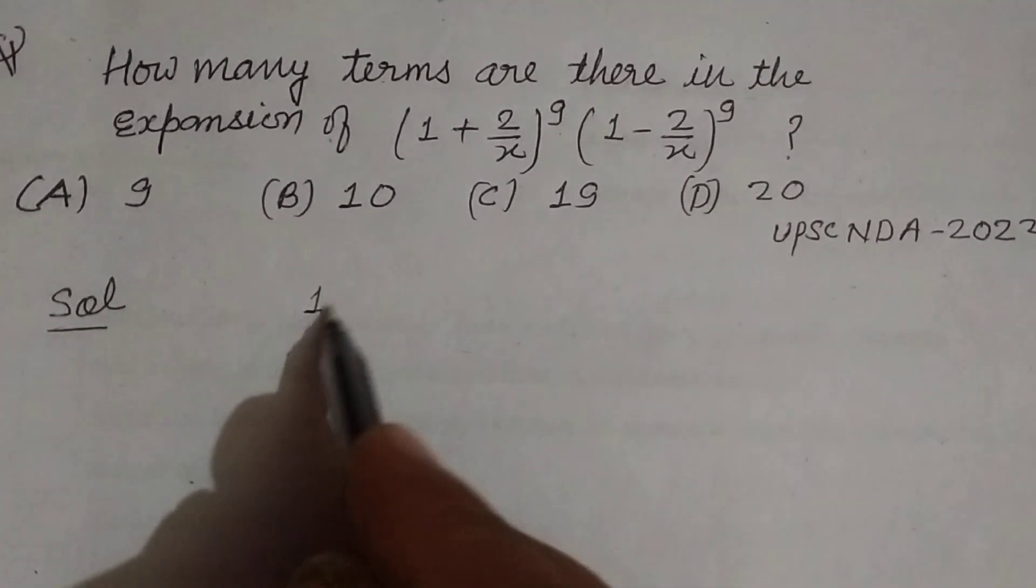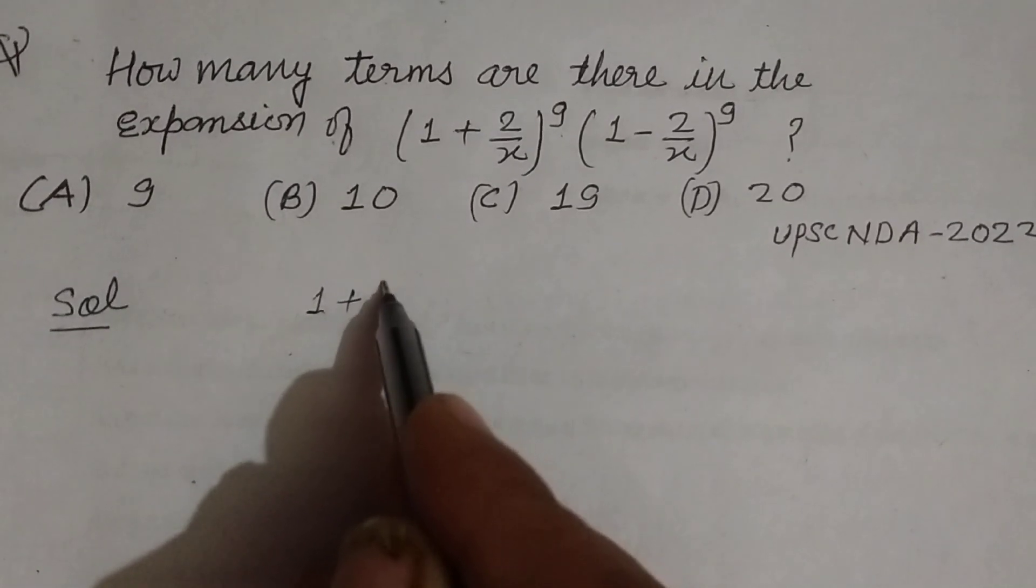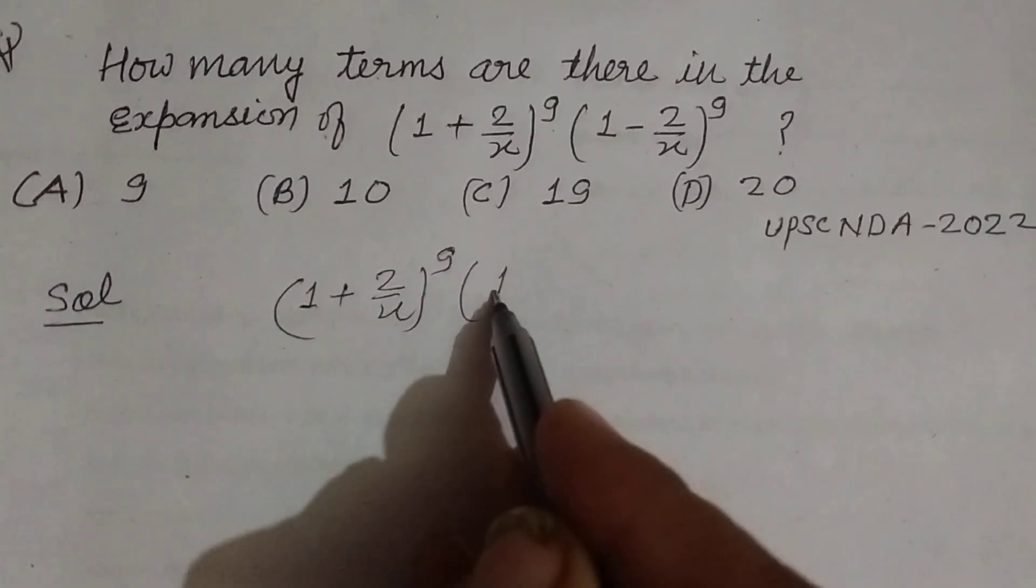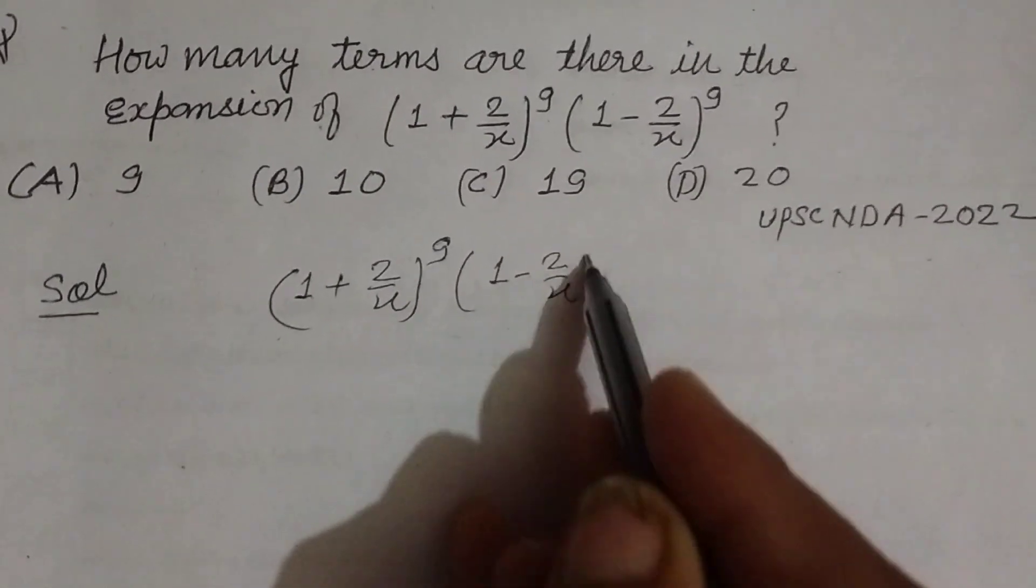Here the given expression is (1 + 2/x)^9 × (1 - 2/x)^9.